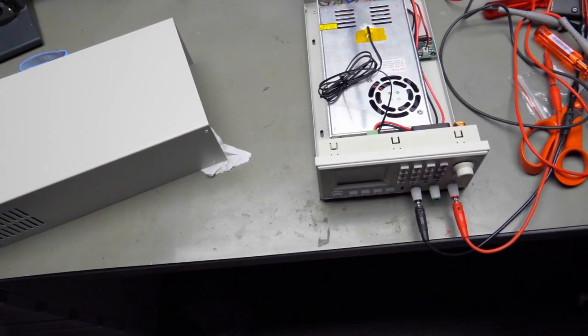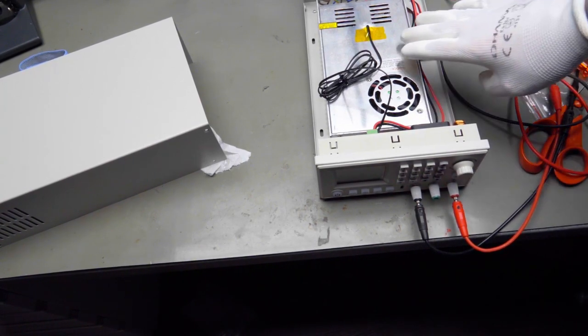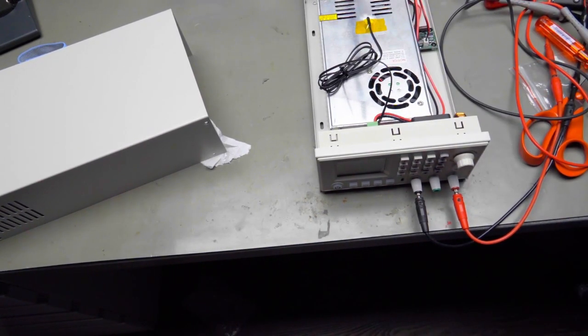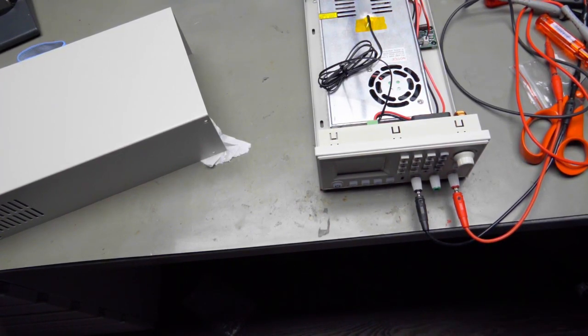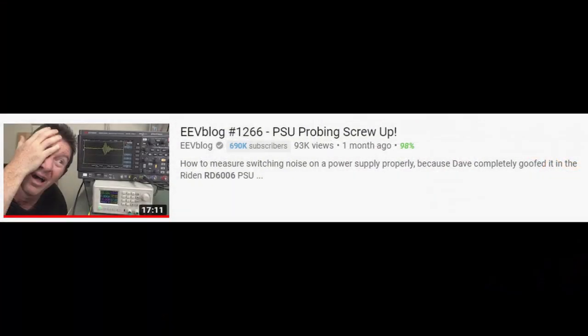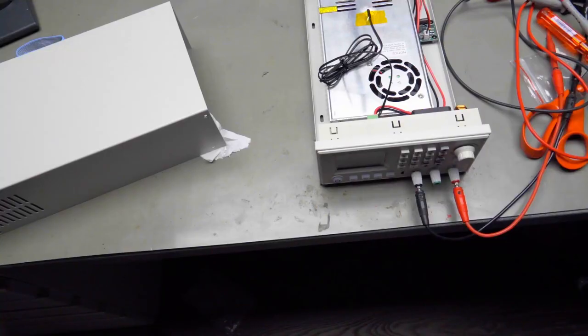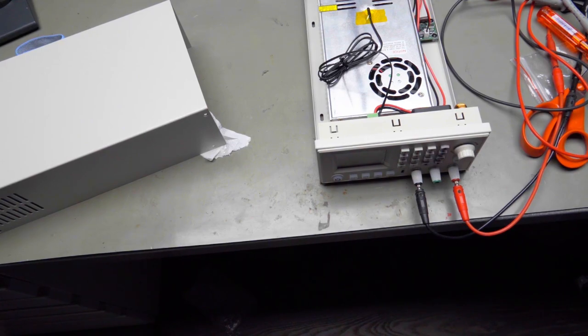By the way even after this extensive power testing nothing was really hot here. And if you are interested in a test about the ripple and stuff like that you find two videos on the EEVblog. One where Dave made a mistake and got wrong numbers. And then in the second one he corrected his mistake and measured the right values. And they were for him okay if I remember right.